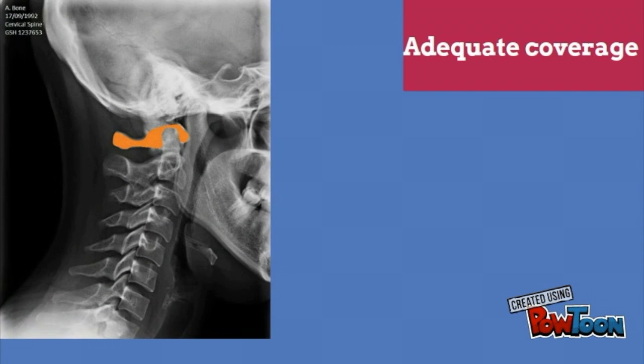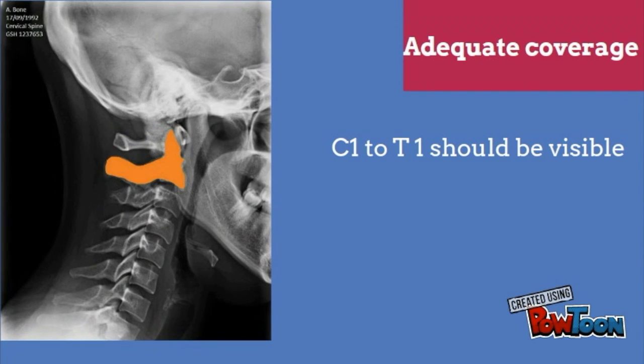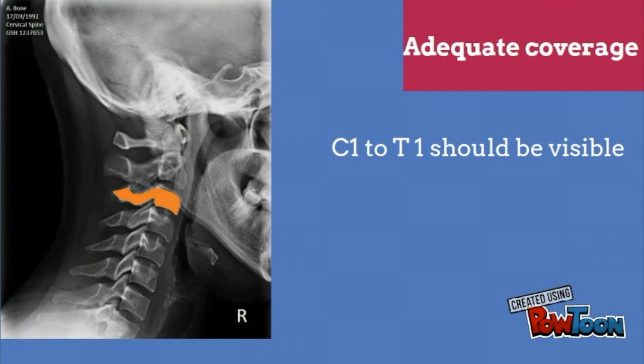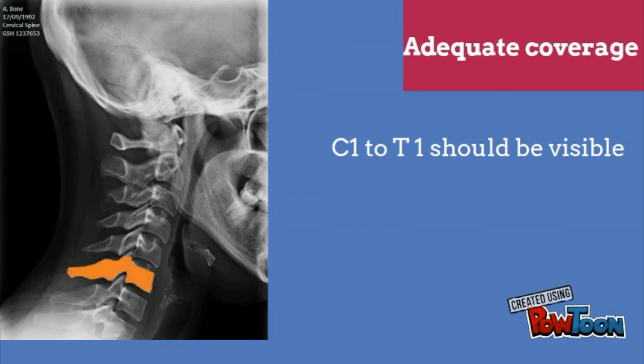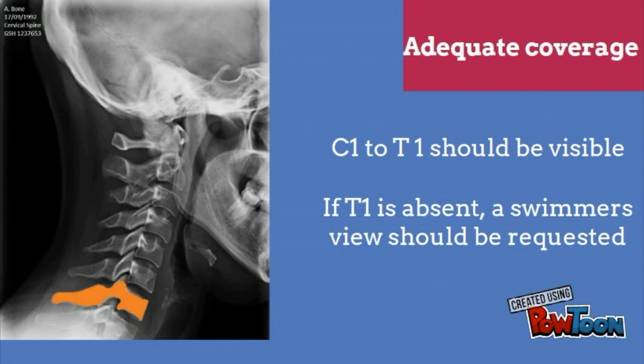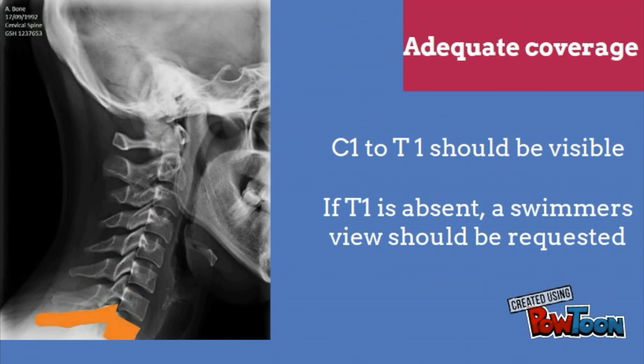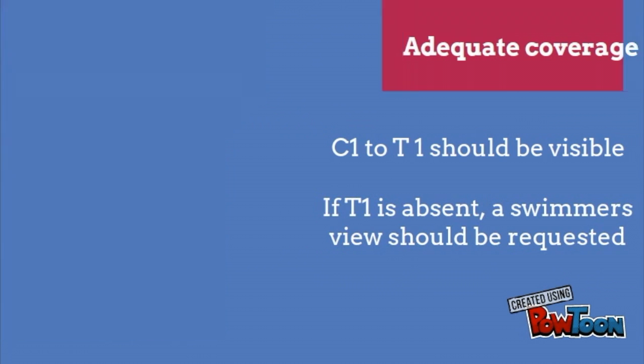Adequate coverage: ensure that all vertebrae from the skull down to T1 are visible. If T1 is absent, a swimmer's view should be requested.